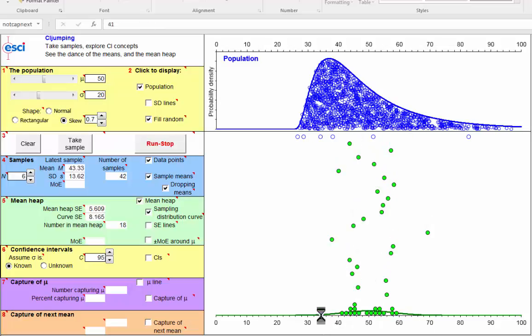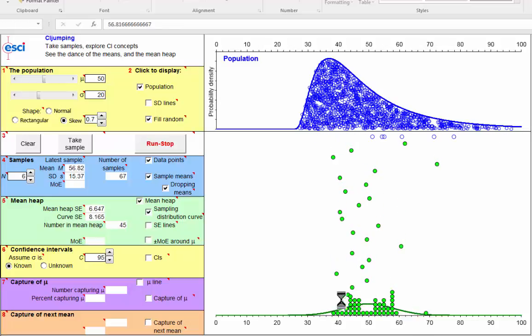And the curve, as usual, is calculated according to the statistical model as a normal distribution. And the question we're asking is, does this normal distribution fit the empirical sampling distribution, the mean heap, the pile of sample means from this rather strange population?